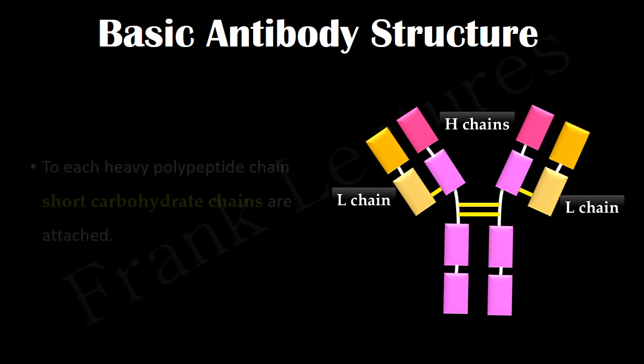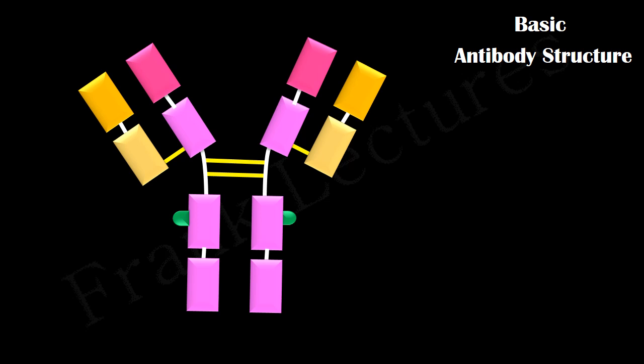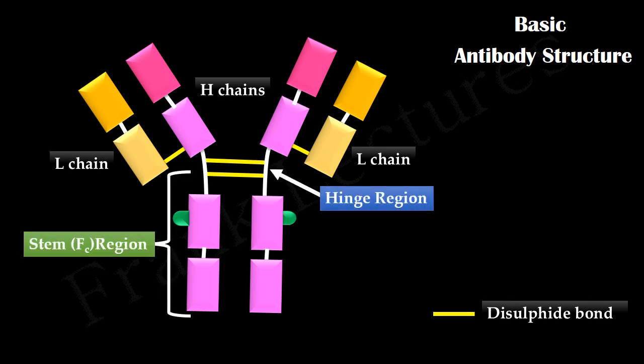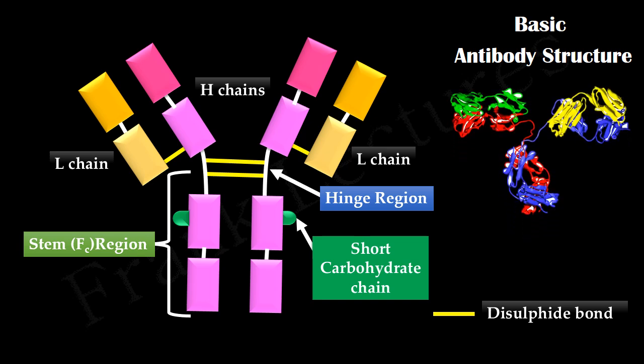To each heavy chain, short carbohydrate chains are attached. These carbohydrate chains serve many additional functions such as increasing the solubility of immunoglobulins. Before going into further details of antibody structure, let's have a look what we have studied just now. These are the two identical heavy chains and these are two identical light chains. Each light chain is attached to a heavy chain via a disulfide bond. The two heavy chains are linked to each other via two disulfide bonds. Mid-region is known as hinge region and this is the stem or FC region. Short carbohydrate chains are attached to each heavy chain. Here you can see how 3D structure of antibody looks like. Let's study more about light and heavy chains.